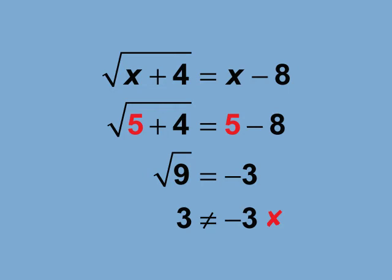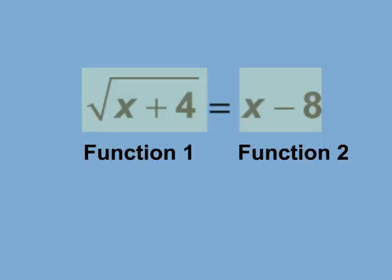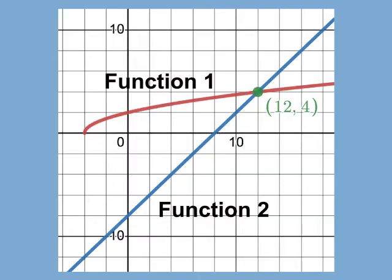Here's another way of looking at this equation. One way to solve equations is to treat each side of the equation as a separate function. Graph each function and find where they intersect. The intersection is the solution. As you can see, the graphs intersect at only one point, where x equals 12. So, where does the extraneous solution come from?